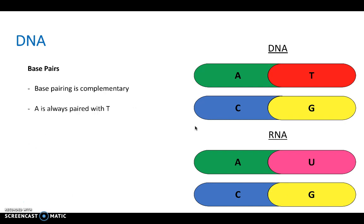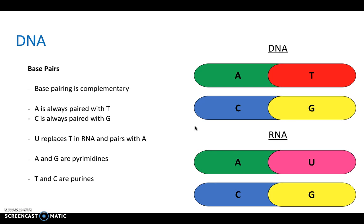So base pairing is complementary. So A, as we've said, is always with T, and C is always with G. And A and G are pyrimidine bases, and T and C are purines. And basically, a pyrimidine must always pair up with its complementary purine base.